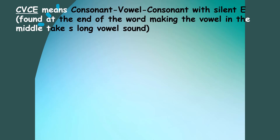The second word pattern is the CVCE, or the consonant-vowel-consonant pattern. The letter E at the end is silent — that is why it is indicated as the silent E. In this word pattern, the vowel in the middle of the two consonants will be read with a long vowel sound. In cases where the second consonant is the letter C, that letter C will take the sound of S. Examples of these are: